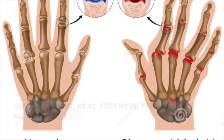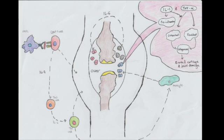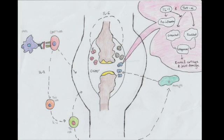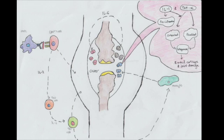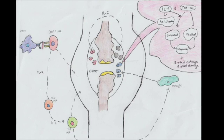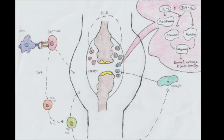So let's talk about the molecular basis of rheumatoid arthritis. Initially, professional antigen-presenting cells, such as B cells, macrophages, and dendritic cells, present arthritis-associated antigens to CD4+ T cells in the local lymphnoids. This initiates the inflammatory cascade.